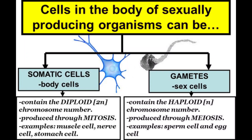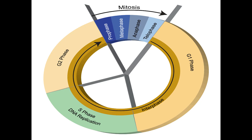Mitosis is the process of cell division within our somatic cells. Somatic cells are essentially all the cells in our body that are not our gamete cells. Gametes divide by another process, and gametes refer to the cells that deal with sexual reproduction. We will talk more about gamete cell division in future videos.